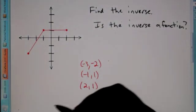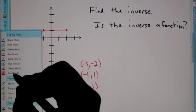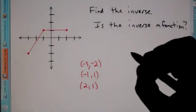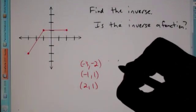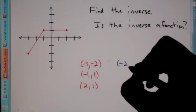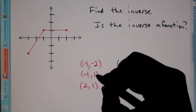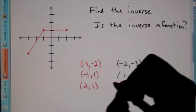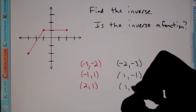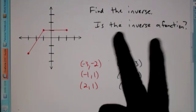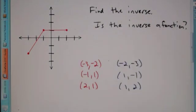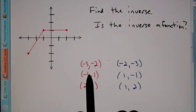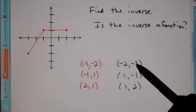In order to find the inverse of a graph, all you have to do is switch the coordinates. So (-3, -2) becomes (-2, -3). The point (-1, 1) becomes (1, -1). And (2, 1) becomes (1, 2). All I did was flip the order of x and y — just like we did with the last problem, we switch x and y.